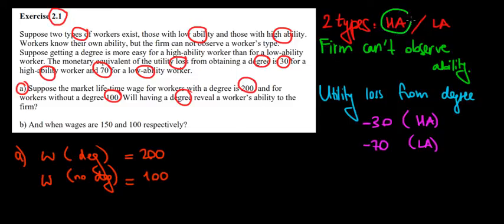If we are a high ability worker, if we are skilled, we know that the utility loss from getting a degree would be equal to 30.